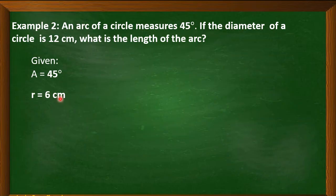Where did we get these 6 cm? Where in fact, given here is the diameter. Remember that the radius is half of the diameter. So, if we have here 12 cm, we have to divide this by 2 to get the value of the radius. So, 12 cm divided by 2, that is equal to 6 cm.